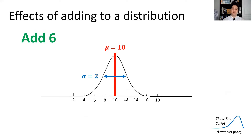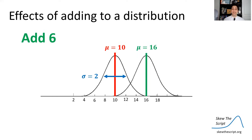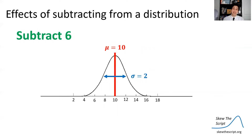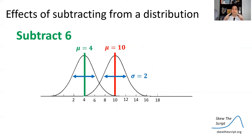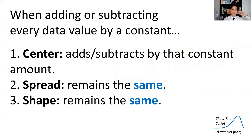There's a reason why. Say you have a data distribution — here's a normal curve centered at 10 with a standard deviation of 2. We'll talk about normal curves in our next lesson. If we add six to every single data point, the whole distribution keeps the same shape and shifts up by six. The new mean is 16. But the spread between the data points stays the same because all data points move the same amount. The same thing happens with subtraction, except it shifts down — the center shifts to 4 — and the spread still doesn't change. So when adding or subtracting a constant, the center changes by that amount, but the spread and shape remain the same.